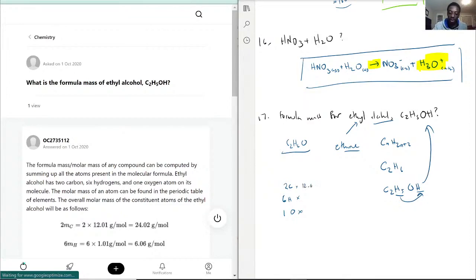So with that being said, carbon is 12.011, hydrogen is 1.008, and oxygen is 15.999. So that's 2 times that is 24.022, 6 is 6.048, and then this is 15.999 still.